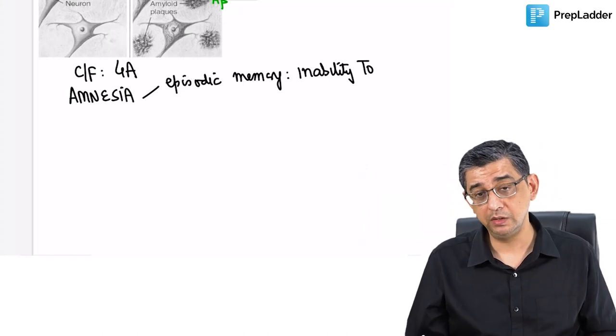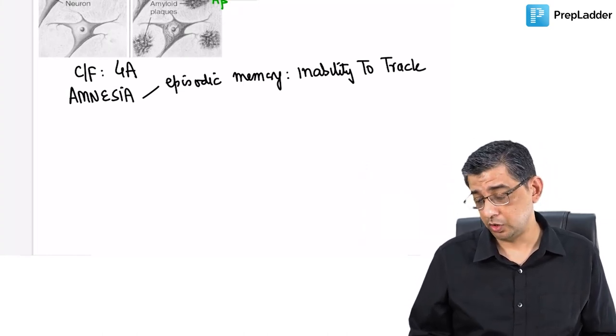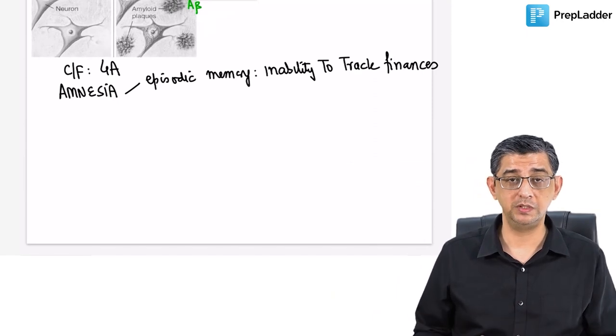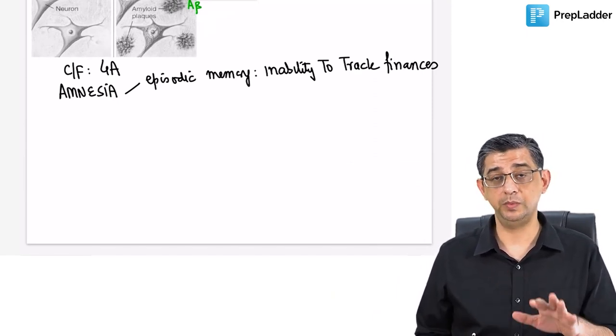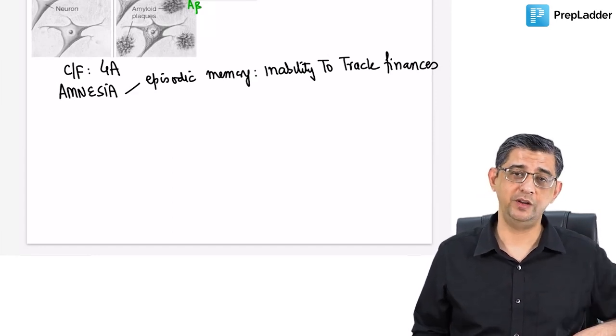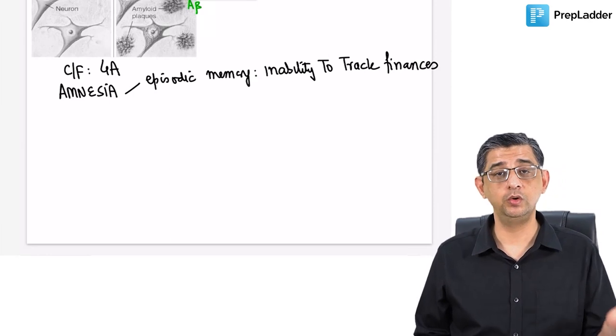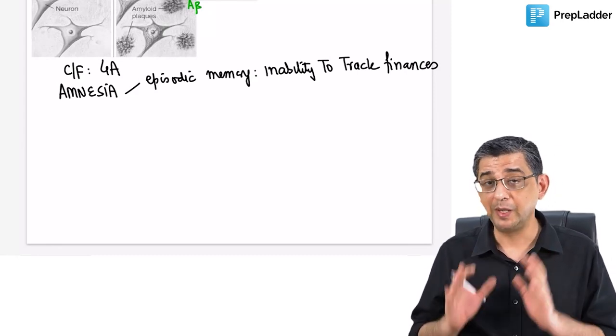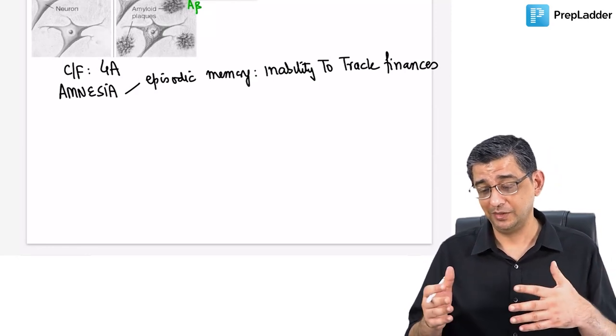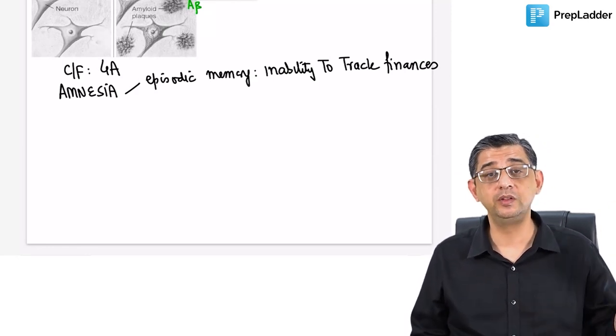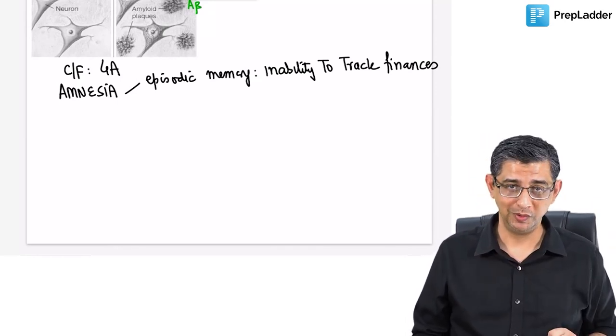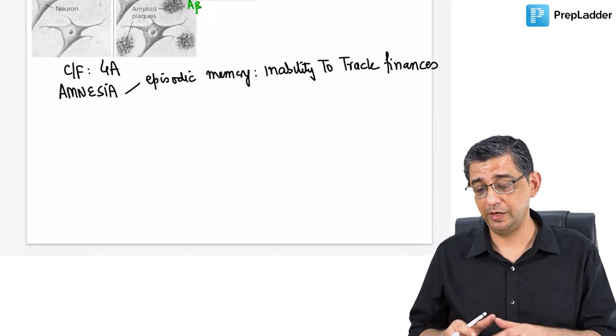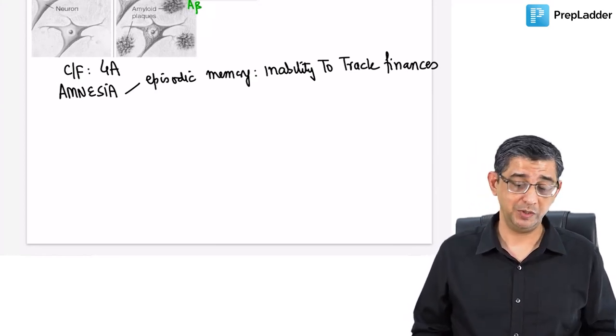Episodic memory basically means this old man will develop inability to do basic things we don't even think about, like track finances. Normally old people are very particular about money aspects. If an old man goes out with 500 rupees in his pocket, he will know he's carrying 500 rupees. Old people are very particular and meticulous because they have so many years of experience.